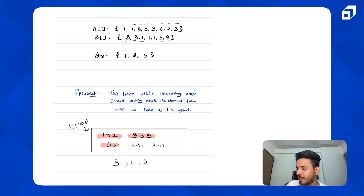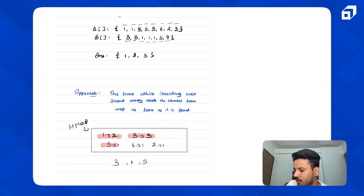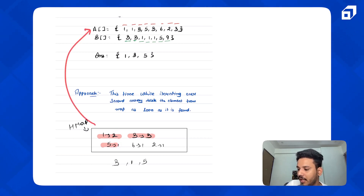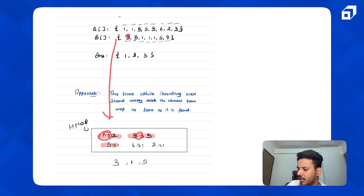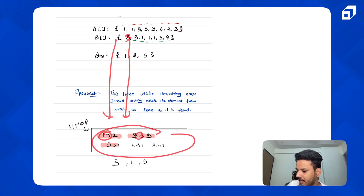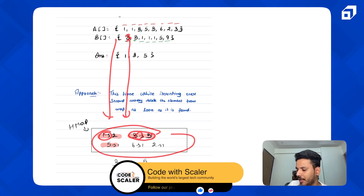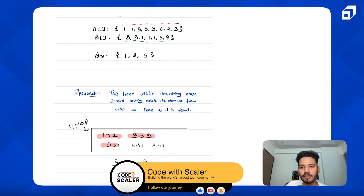So this time, instead of decreasing frequency, we just delete the element directly. Also, you can notice that frequency is not needed at all — we only need to know if the element was present in array A. So we can store elements in a HashSet instead of a HashMap. When we find a three in B, we check it's in the set, print it, and delete it from the set so another three in B won't match.